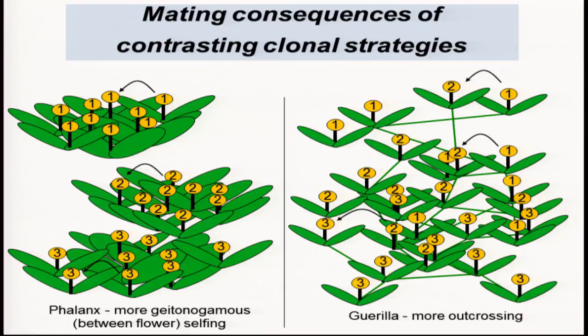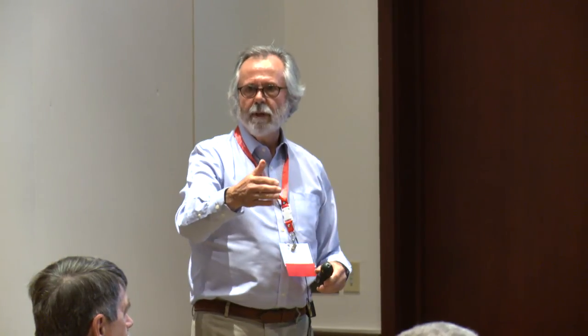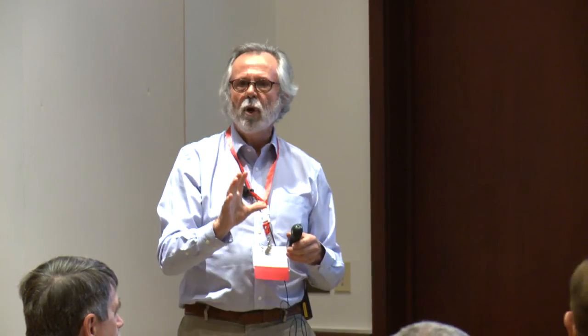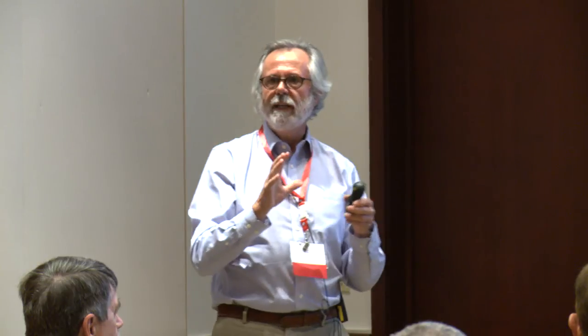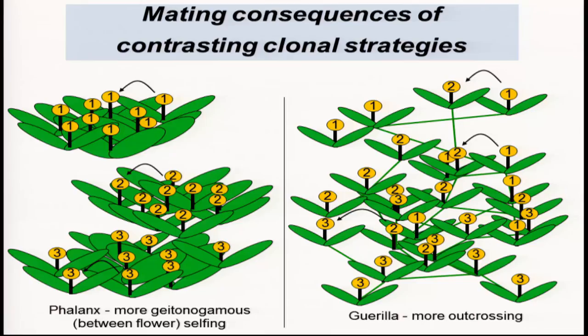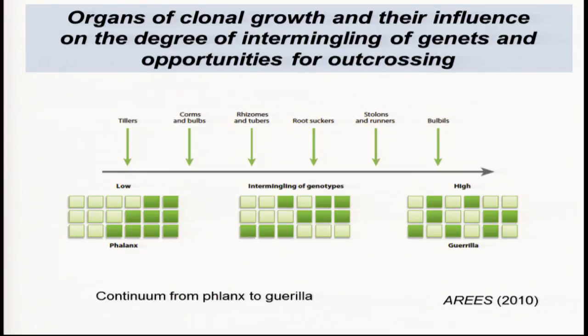If a clone gets larger and larger, particularly if they're not intermingled with other clones, then the selfing rate is likely to increase because of hermaphroditism. Marcel Dorkin is going to be talking about this in detail tomorrow, but he has done a very nice model looking at the extent to which clonality influences the mating system and how seed dispersal is also an important aspect. The more intermingled clones are, the more likely outcrossing will occur.